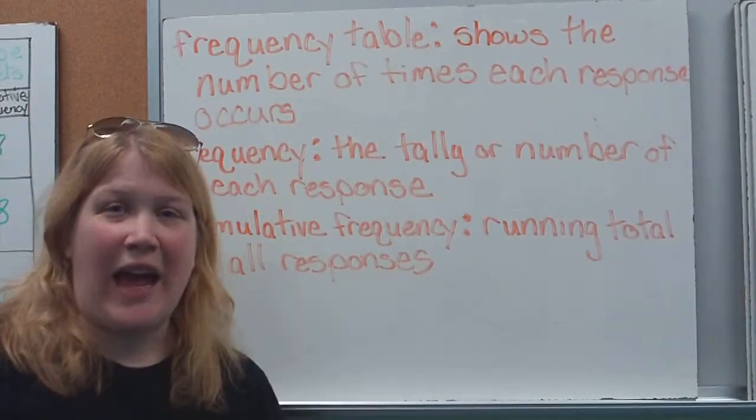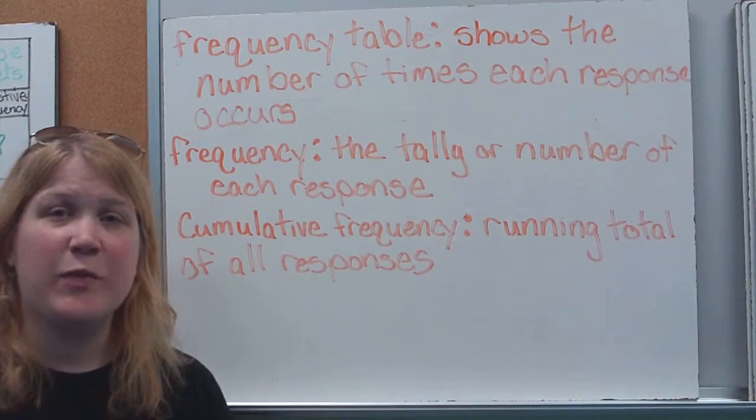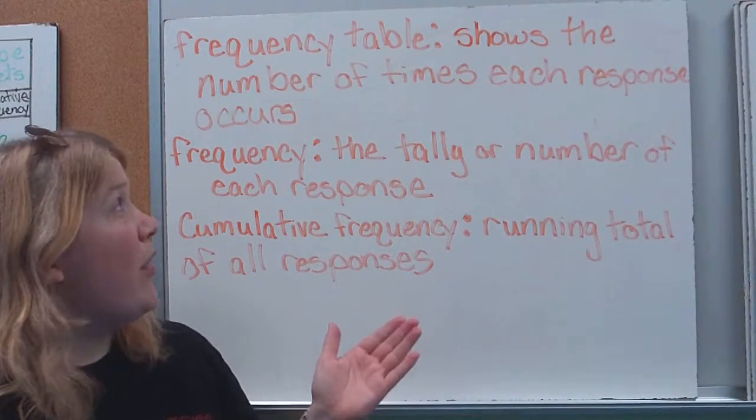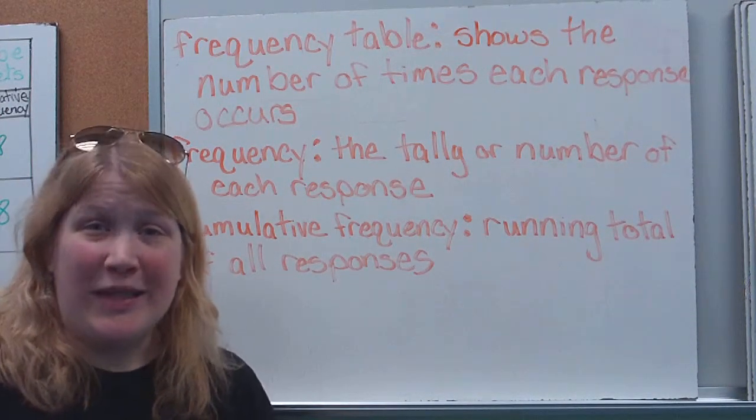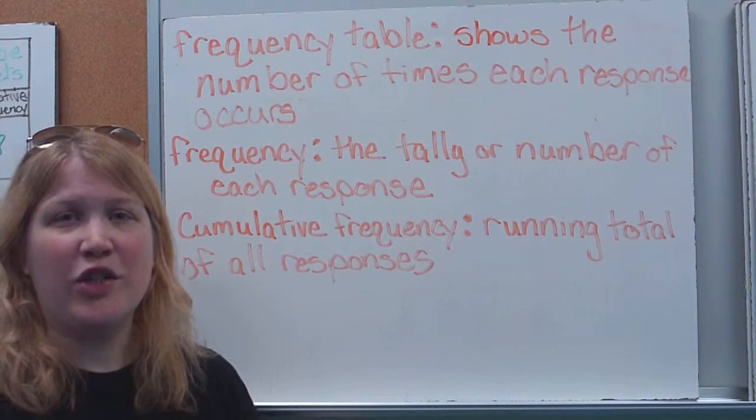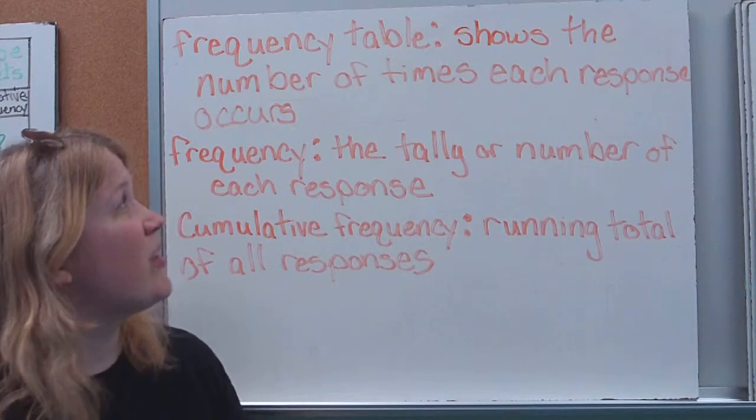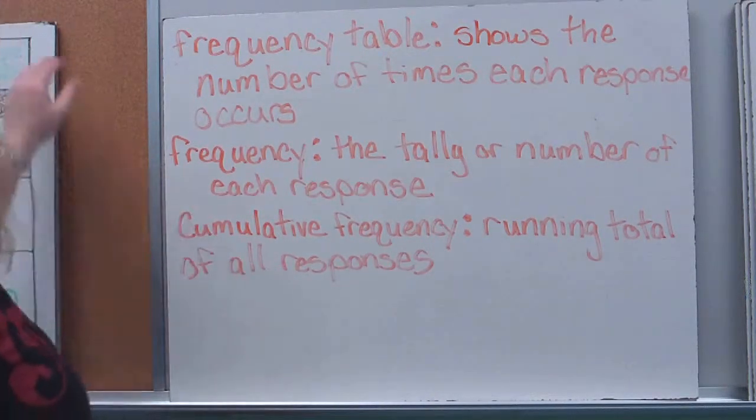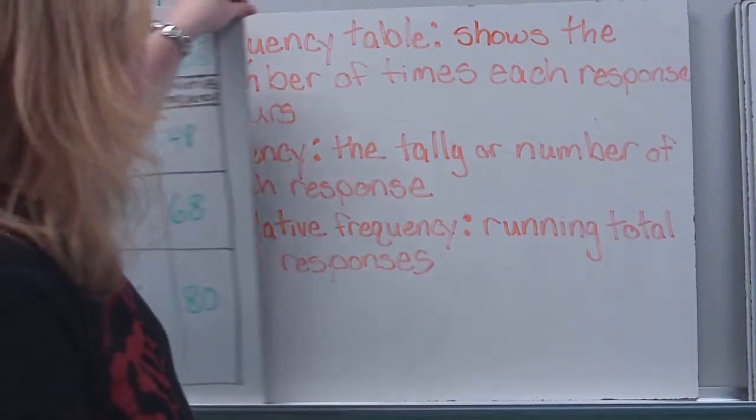When we're getting that data, how are we going to collect that data? Well, there's a specific way that we want to go about collecting this data. One thing we can do is what we call a frequency table. And this is just a way that we're going to gather data. And I'll show you what one looks like here. This simply shows the number of times each response was chosen. And don't worry, I'm going to flip back and forth between these two boards.